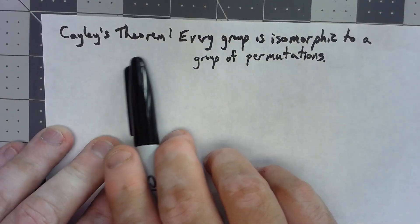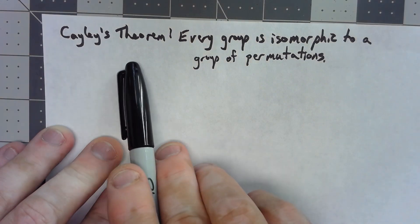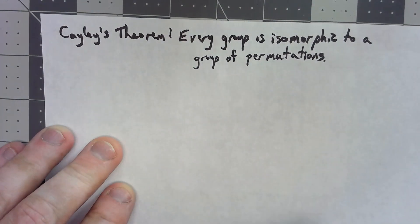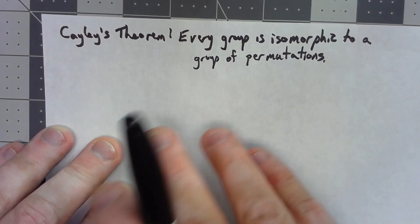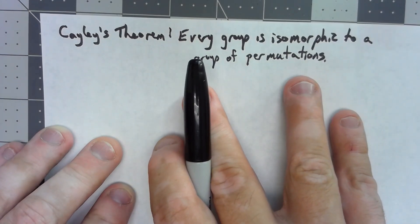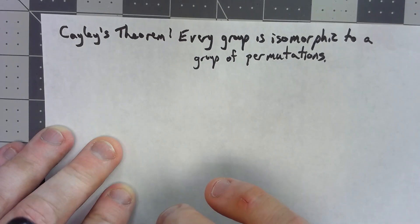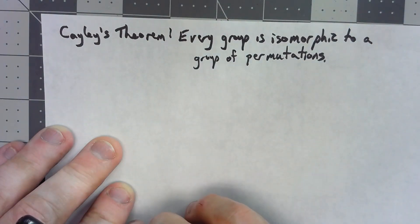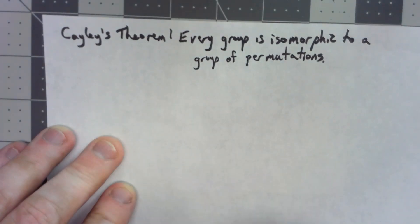Let's go through some of the key ideas in an incredibly important theorem in abstract algebra. Cayley's theorem states that every single group, no matter what, is always isomorphic to a group of permutations. This doesn't say that it's isomorphic to S5 or Sn for some n — in fact, it doesn't necessarily have to be a finite group of permutations, because some groups are infinite.